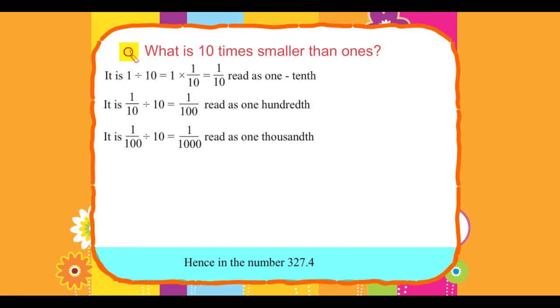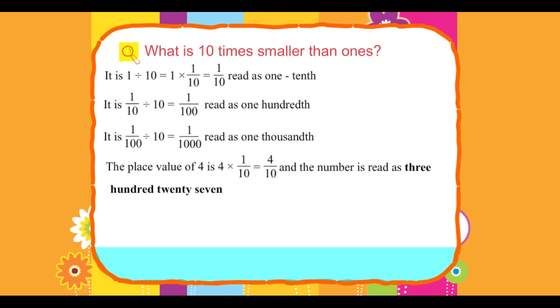Hence, in the number 327.4, the place value of 4 is 4 into 1 upon 10 equals 4 upon 10, and the number is read as three hundred twenty-seven and four tenths.